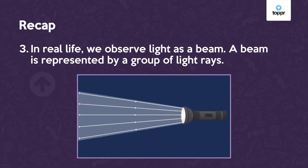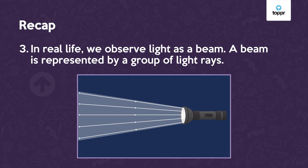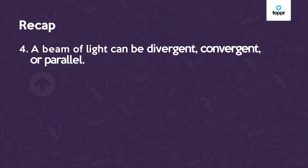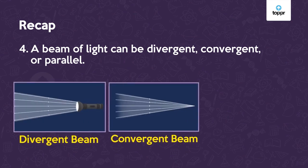In real life you observe light as a beam. A beam is represented by a group of light rays. A beam of light can be divergent, convergent, or parallel.